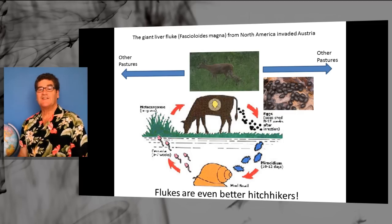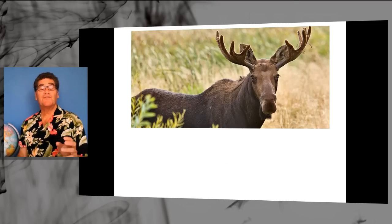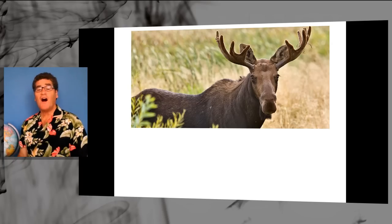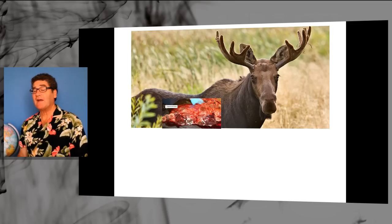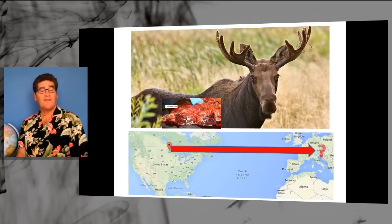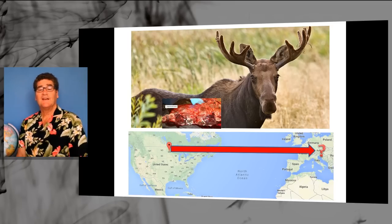These flukes are even better hitchhikers than flatworms. This is a picture of a moose from Minnesota that co-evolved with that liver fluke. And it can maintain a very high parasite load and still survive. What we're not sure about is how other mammals in Europe will survive with the same fluke load since they didn't evolve with that parasite.